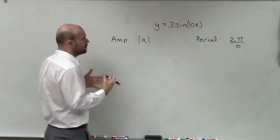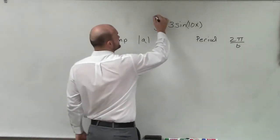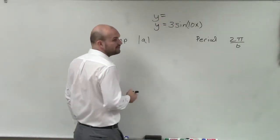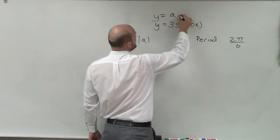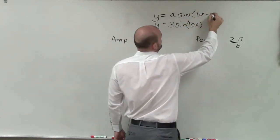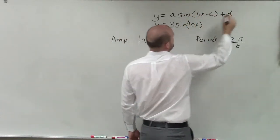So now we need to say, well, where is a and where is b? So we go back to our general form of our sine and cosine function, which would be a sin(bx - c) + d.